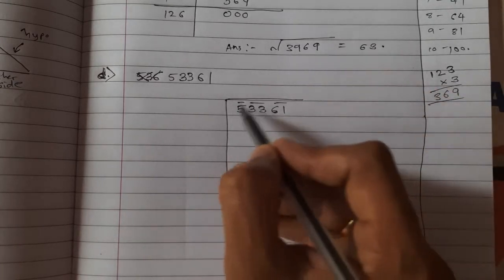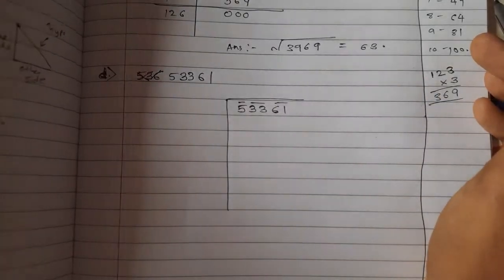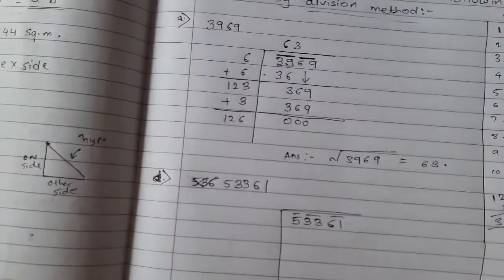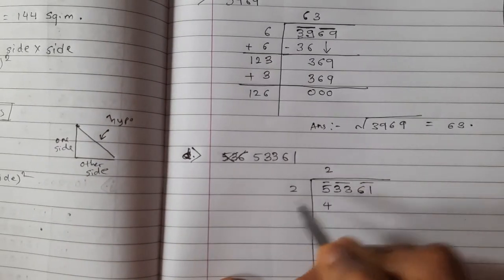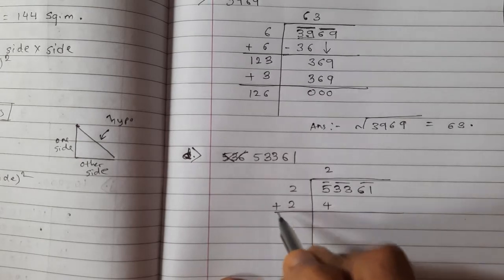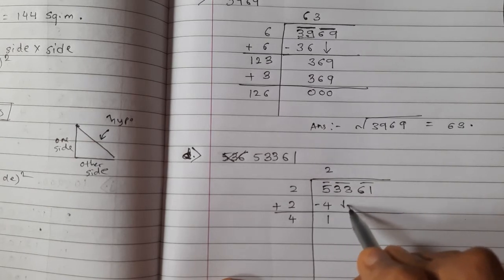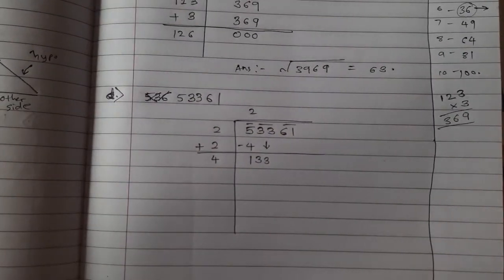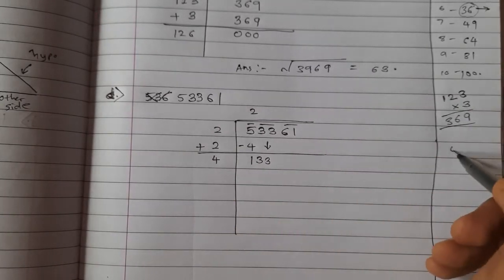Our first group is only having one number: 5. The nearest perfect square to 5 is 4, because 9 is greater than 5. So 2 × 2 = 4. Write 2 in the quotient and also add 2 to get 4. Subtract: 5 − 4 = 1, then bring down the next group: 133.